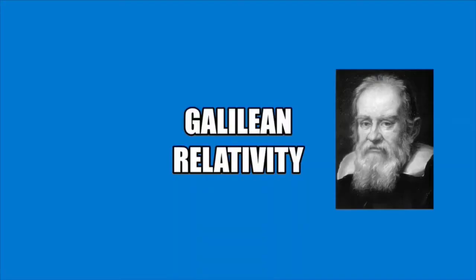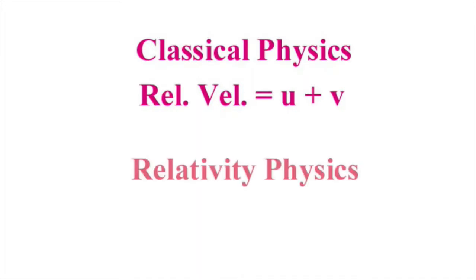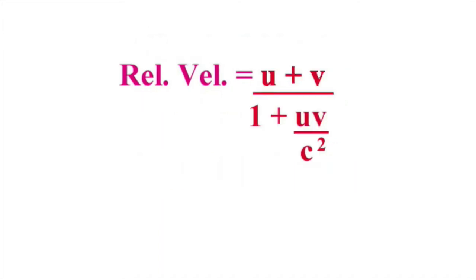This is Galilean or classical relativity. In classical physics, we simply add the two velocities together: U plus V. In relativity physics though, it's a different formula — it's U plus V divided by 1 plus UV over C squared, where C is the speed of light. How we arrive at this formula we will deal with in another video.